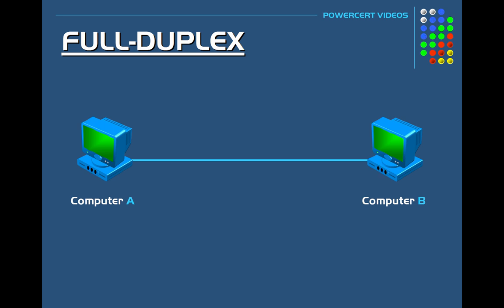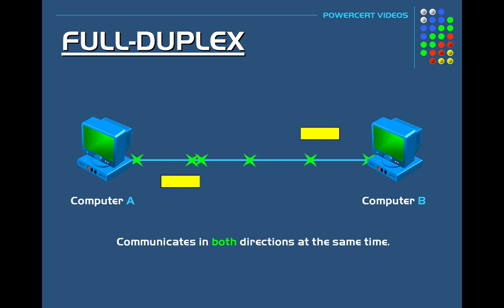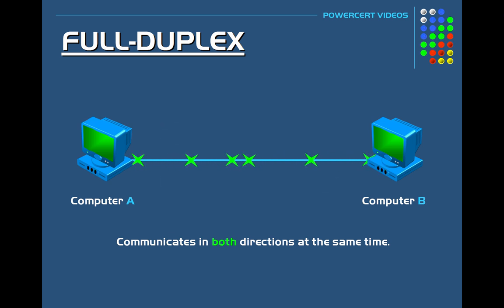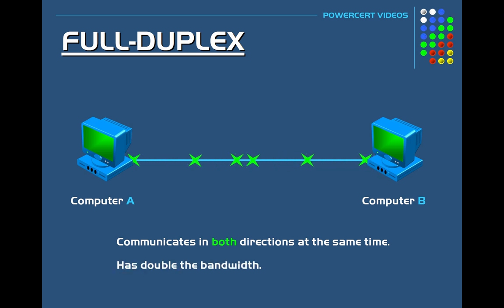Full duplex is better. In a full duplex, the two devices can also communicate in both directions, but the difference is that they can communicate in both directions at the same time, which gives full duplex an advantage over half duplex. Devices can send and receive data simultaneously. As a result, a full duplex system has double the bandwidth of half duplex.